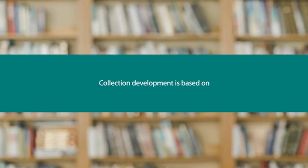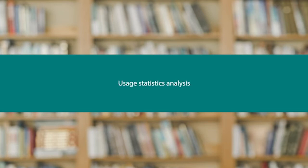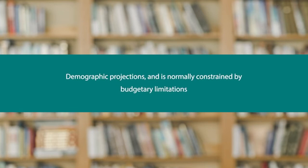Collection development is based on ongoing assessments of the information needs of library clientele, uses statistics analysis and demographic projections, and is normally constrained by budgetary limitations. Every year a library gets a certain amount of budget to spend on certain verticals, one of which is collection development — covering books, periodicals, databases, and audiovisuals. So the budget is limited and you have to bring in a lot of intelligence to allocate funds properly to each sector.